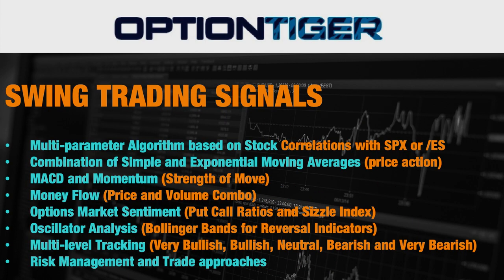Let's talk about the swing trading signals itself. This is a multi-parameter algorithm-based swing trading signals, and we also look at the stock correlations with the SPX or the ES, which is the S&P 500 futures. There are different indicators that go into the algorithm — we combine price action indicators, momentum indicators, and a price and volume combo. What the signals tell you are stocks in five different states: very bullish, bullish, neutral, bearish, or very bearish.